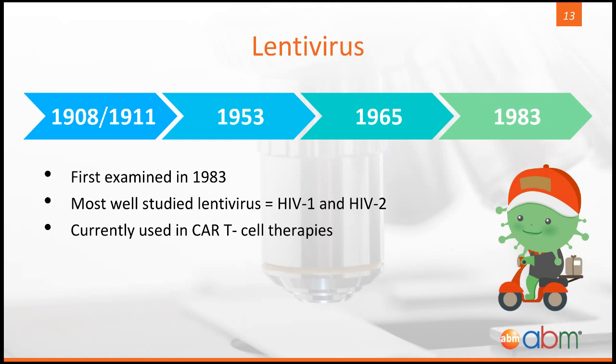Finally, the lentivirus is the newest category of viral vector we'll be discussing and was discovered in 1983. The most well-studied lentivirus at the moment is HIV 1 and 2, and is currently being used in chimeric antigen receptor T-cell therapies, also known as CAR-T therapies. This therapy is used as a technique to fight cancer and requires the use of T-cells modified using lentiviruses. With this brief background, I'd like to pass things over to Michael, who will begin with a brief overview of the topics for today's talk.